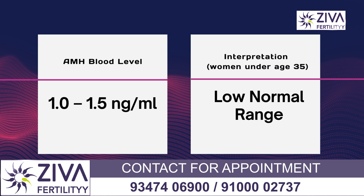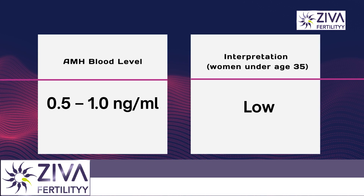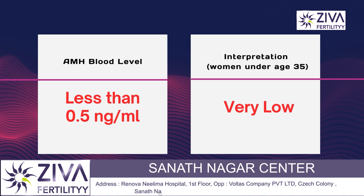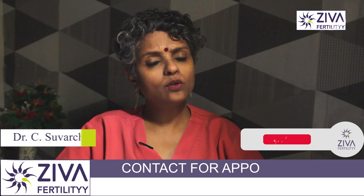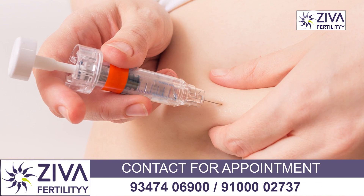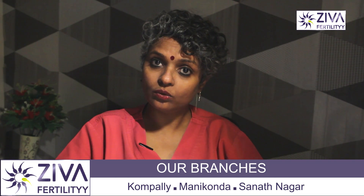If it is 0.5 to 1 ng/mL, it is low — this is where treatments should be hastened. If it is less than 0.5 ng/mL, it is considered very low. It also means that your response to stimulation hormones and to treatments will be compromised. Whatever treatments you are planning to do, it is better to hasten the procedure and get it done fast.